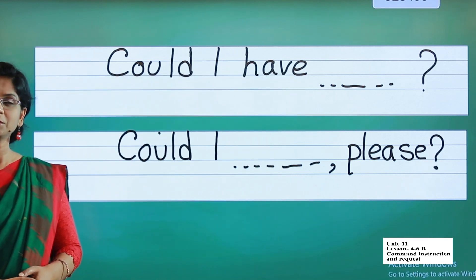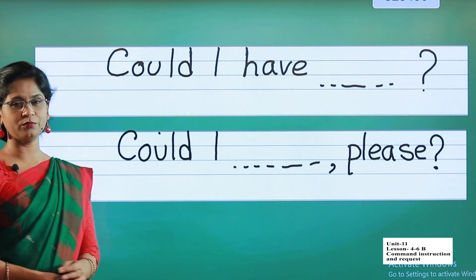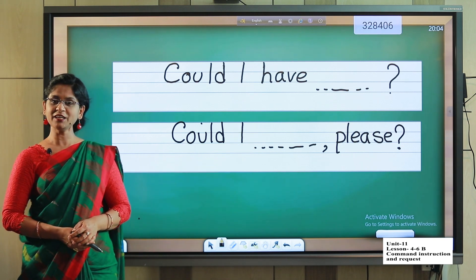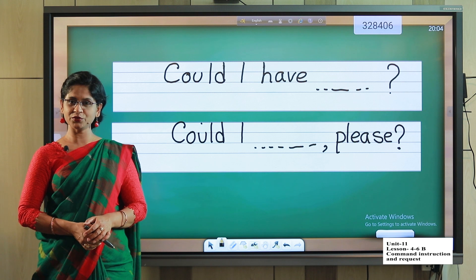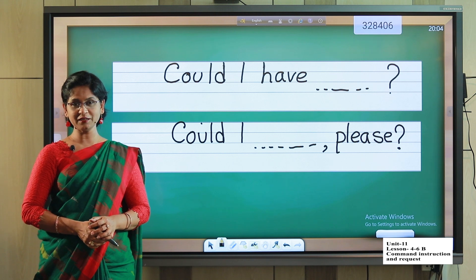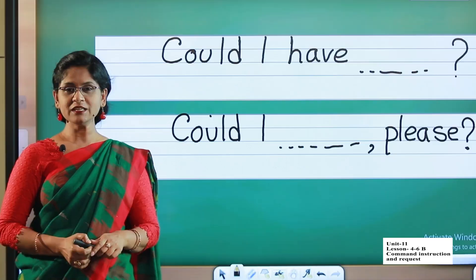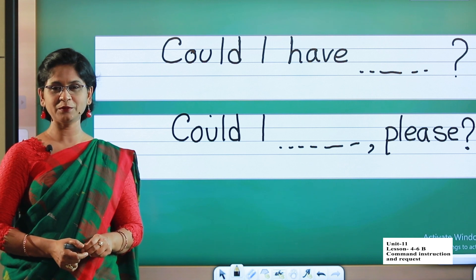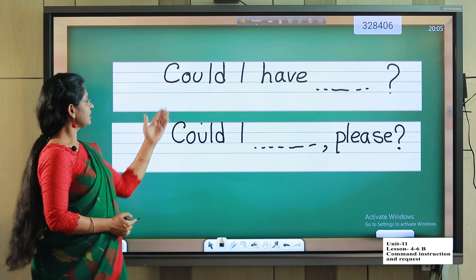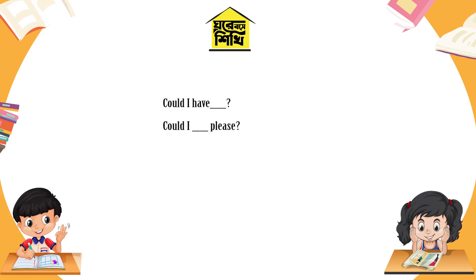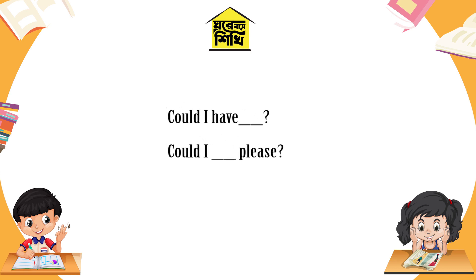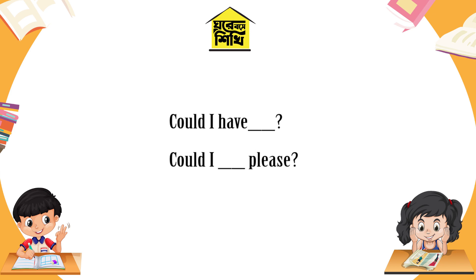Please everyone look at the board. Could I open the door? Could I close the window? Could I open the book? Could I stand up? Could I sit down? Now please everyone take your notebook and write these two structures, then make sentences according to what you want.